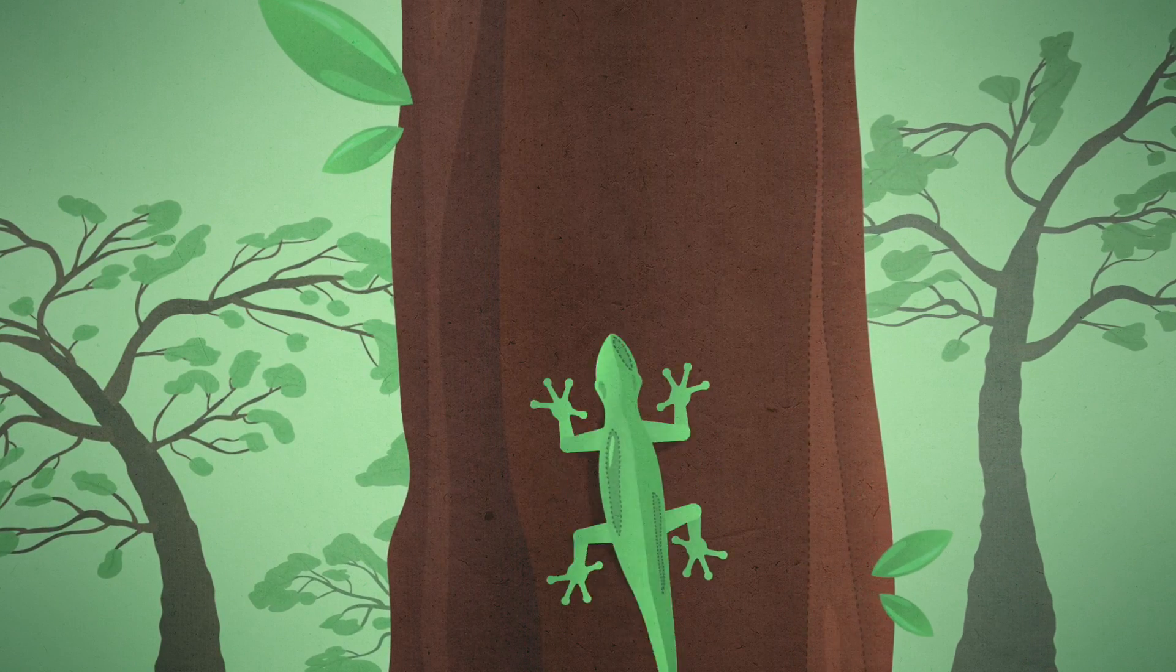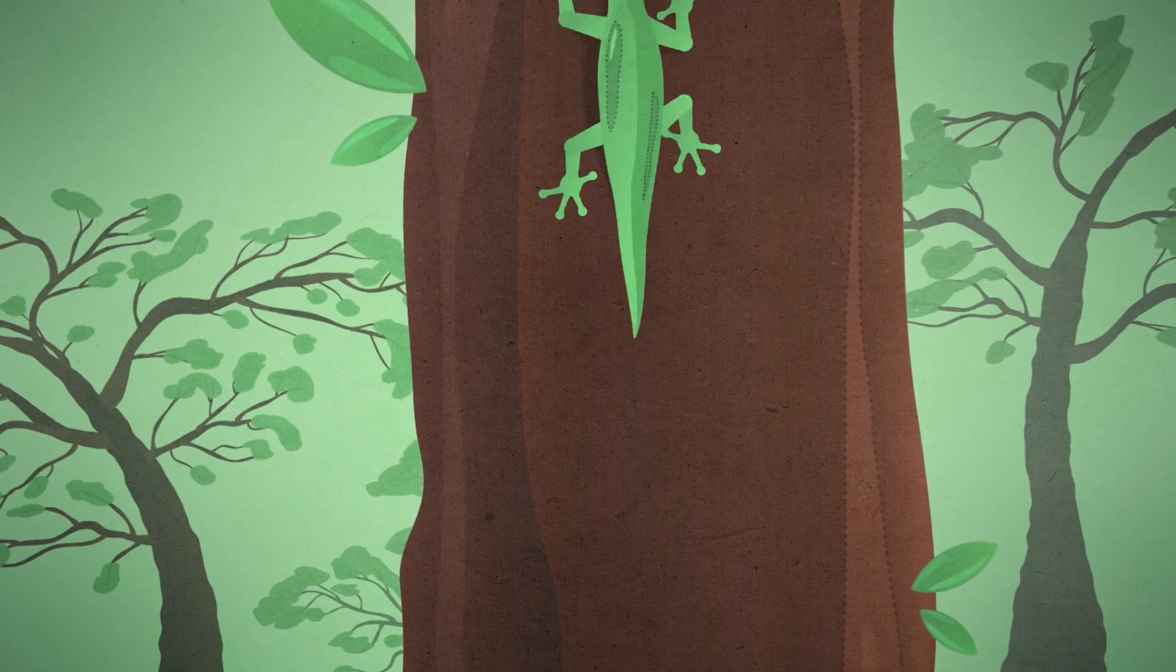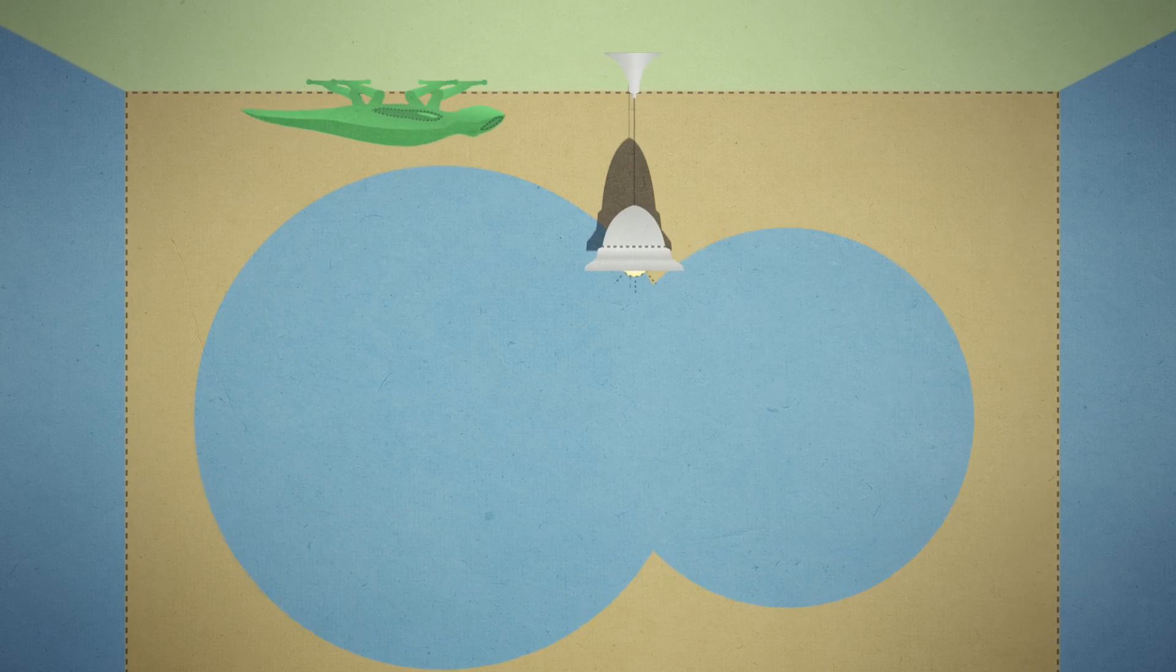By manipulating the surface in another way, we can copy the structure that the gecko lizard has under its toes, enabling the gecko to walk upside down.